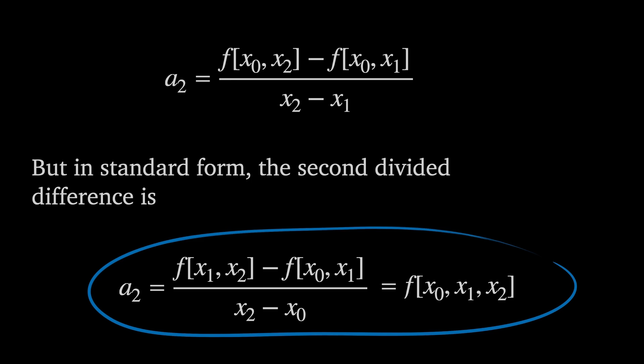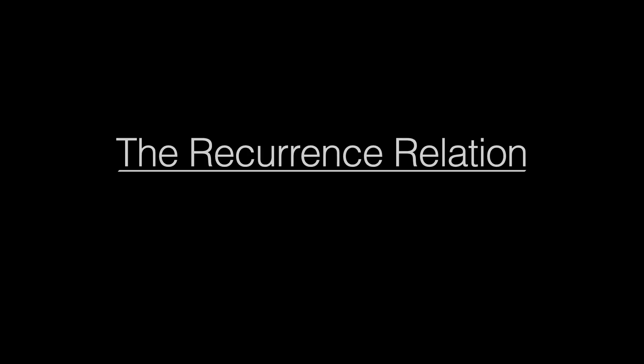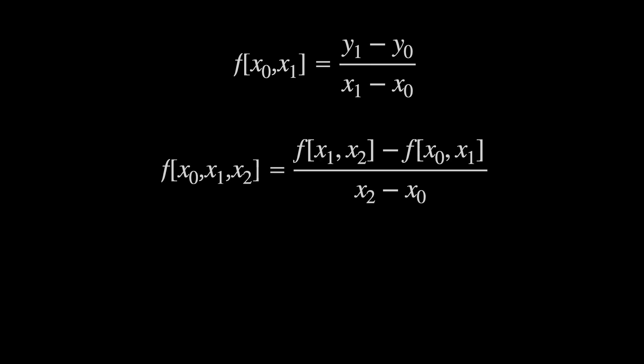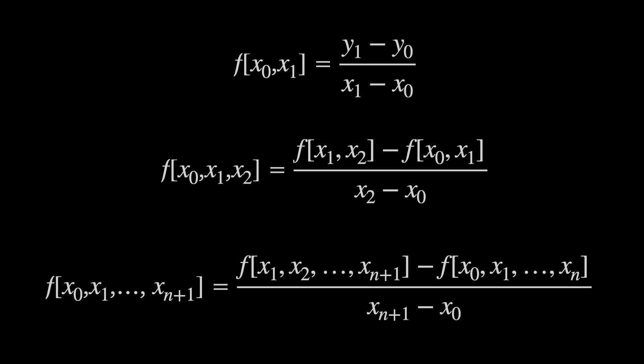This standard form comes from the recurrence relation — a general way of calculating divided differences. The first order divided difference of x sub 0 and x sub 1 is y sub 1 minus y sub 0 over x sub 1 minus x sub 0, and y sub 0 can be thought of as a zeroth order divided difference. In general, the n plus 1th order divided difference of x sub 0 to x sub n plus 1 equals the nth order divided difference of x sub 1 to x sub n plus 1 minus the nth order divided difference of x sub 0 to x sub n, all divided by x sub n plus 1 minus x sub 0. This is the recurrence relation.